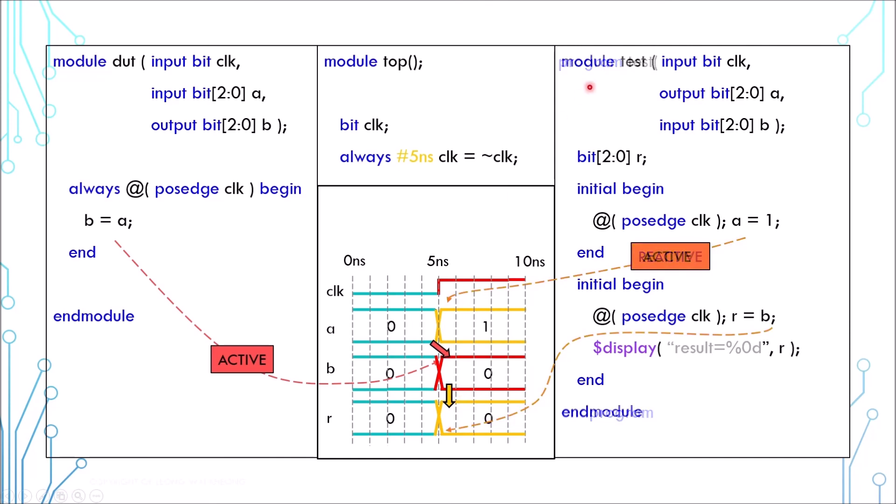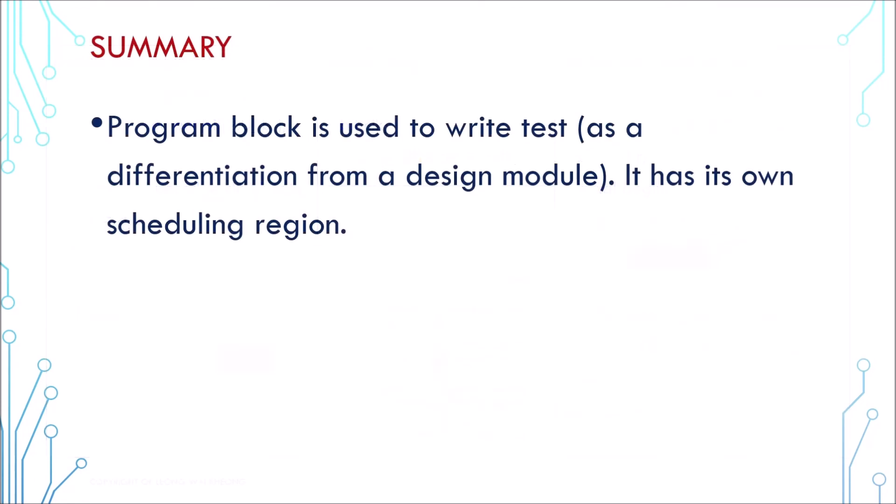If however we are using module for the test, all assignments would be in active regions and the simulator can choose whichever to execute first. That may lead to incorrect behavior modeling. Today we've looked at program block and scheduling semantics. Next we'll look into the assertion property.